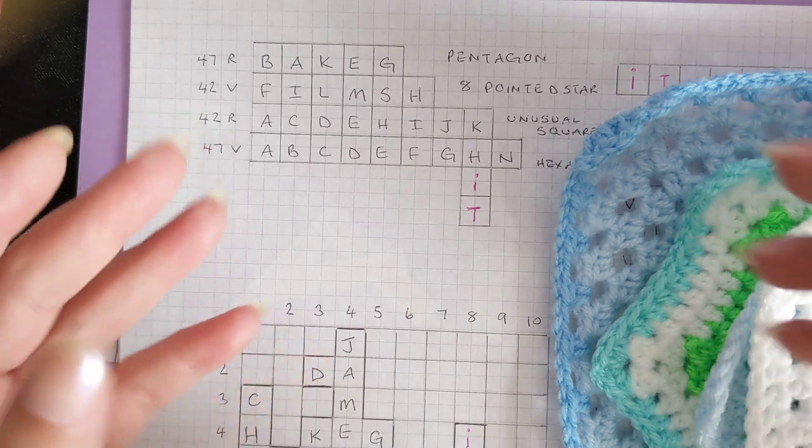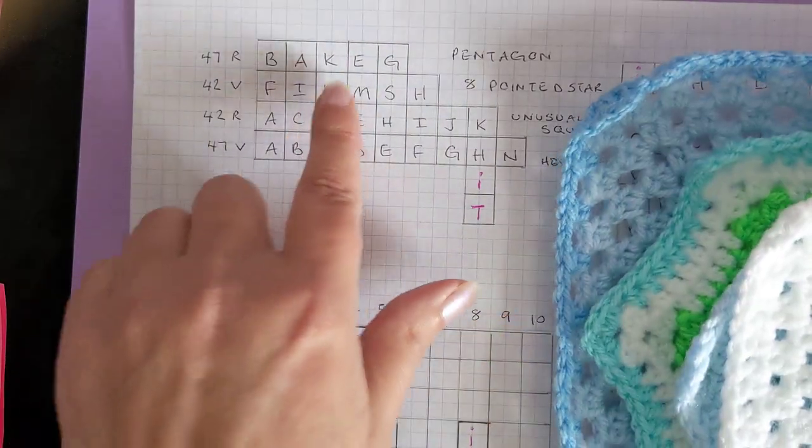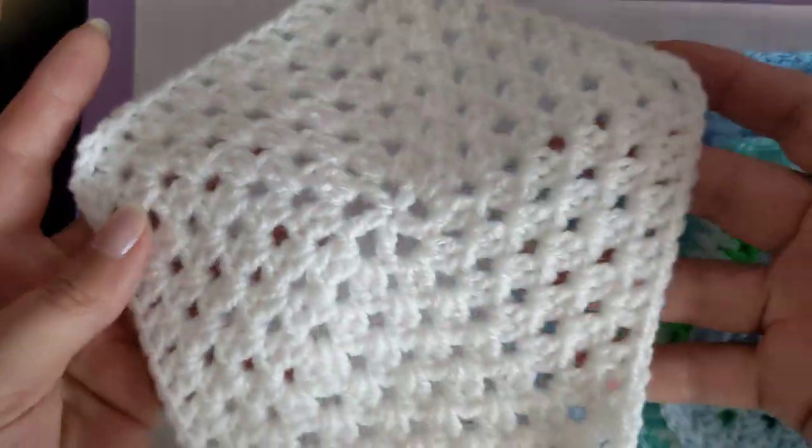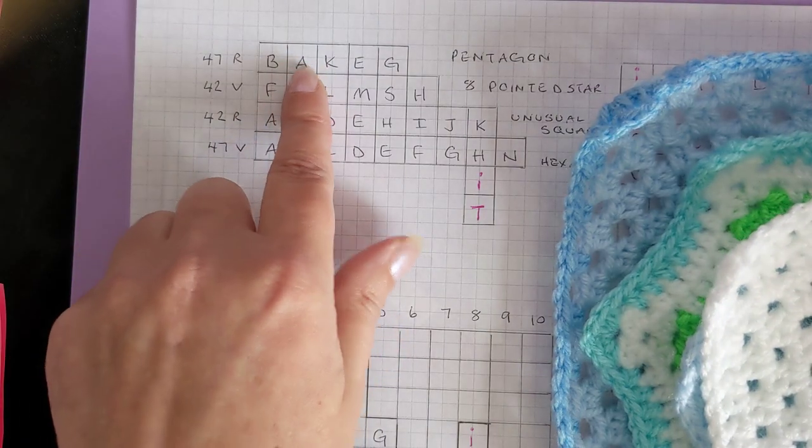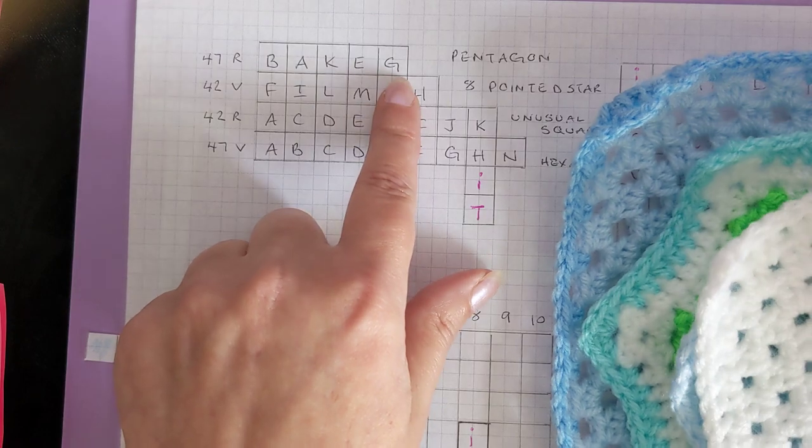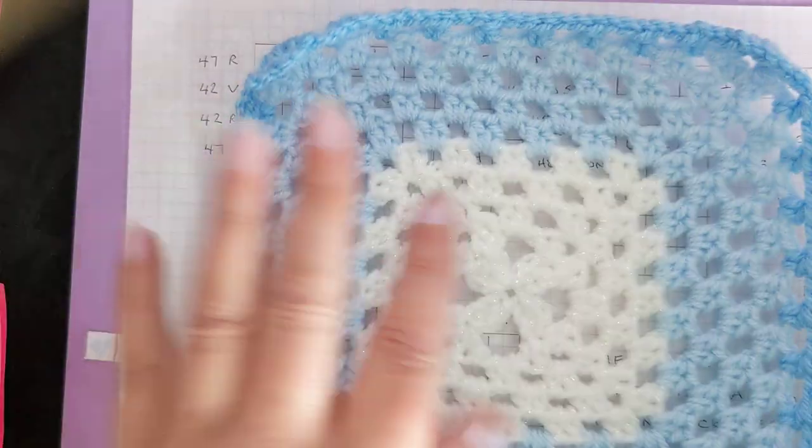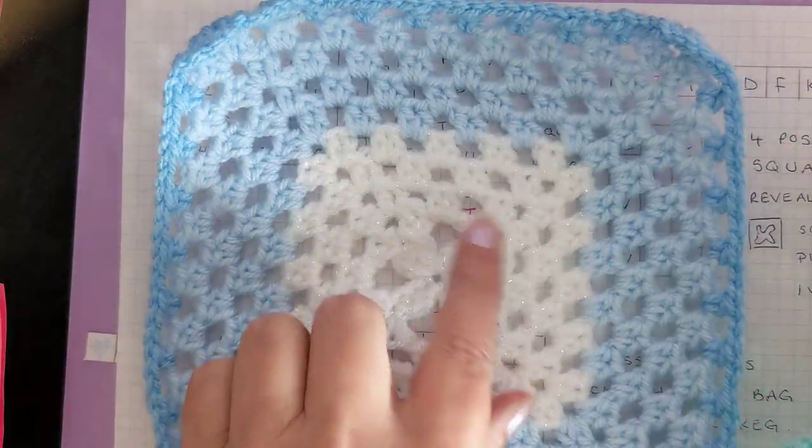For page 47, which is the pentagon, I got 'bake' and the letter G. For page 42, this is the unusual square.